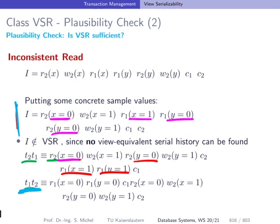And how about this one? Well, here we have x equals 0, y equals 0, here we have x equals 0, and y equals 0. So all 0s. And obviously, this is also not the same as here. So none of these two serial histories is equivalent to I, hence I is not included in VSR.